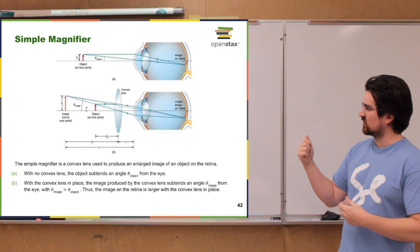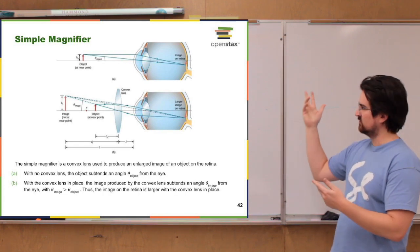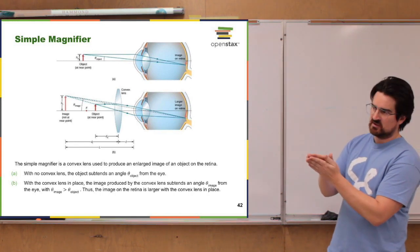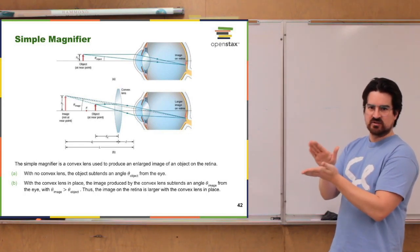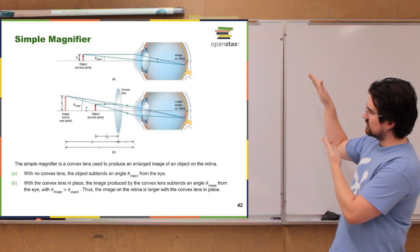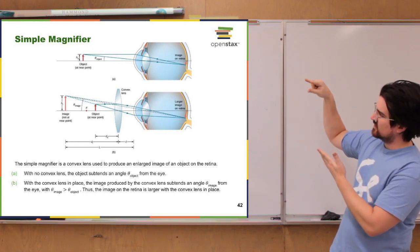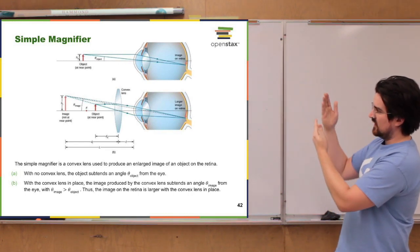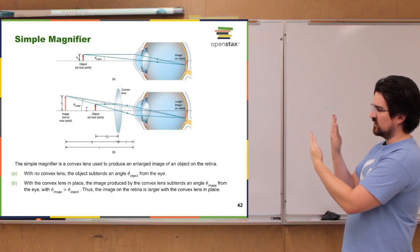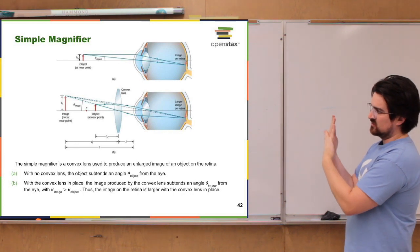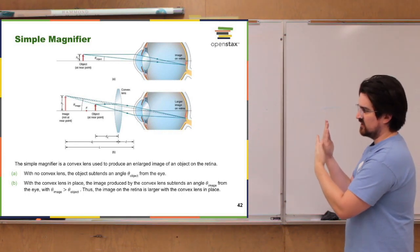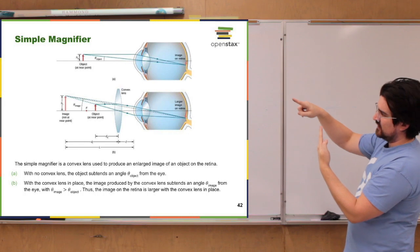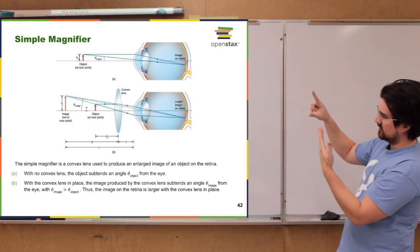Something else we might use lenses for is just a magnifying glass, a simple magnifier. What you're doing there is using a convex lens to change the apparent size, the angular size of the object. Without the magnifier, our eye sees the object taking up a smallish angle. Versus if you have a magnifier and put it between your eye and the object, and the object is within the focal distance, it's going to create that virtual image that's larger out here, and that image takes up a much larger angle in our vision.